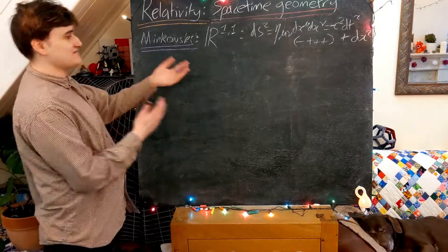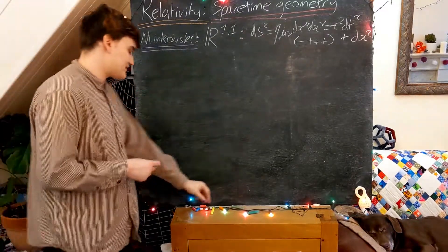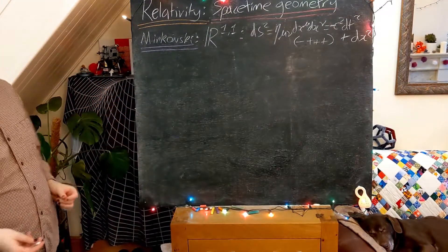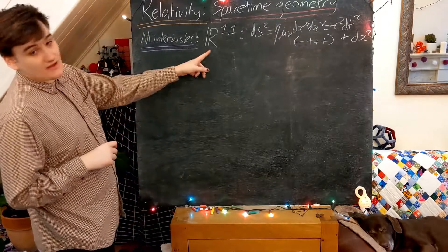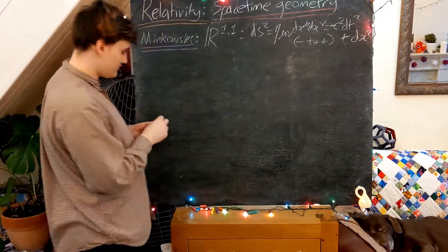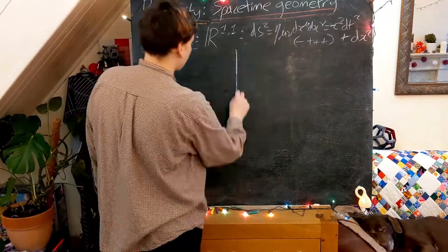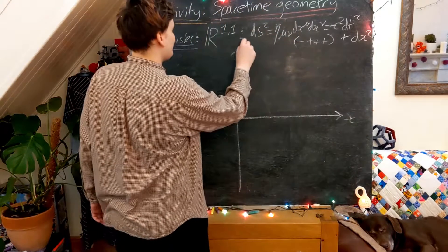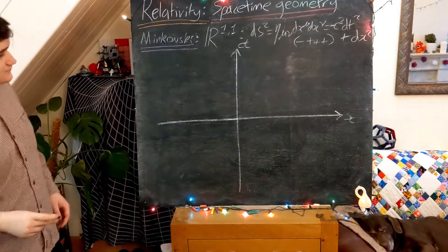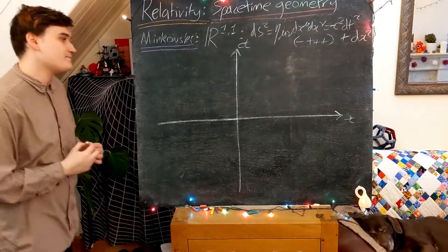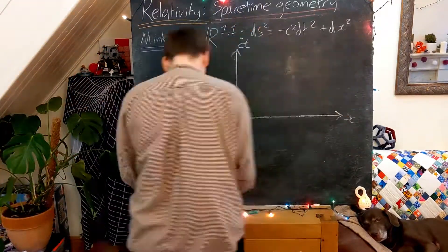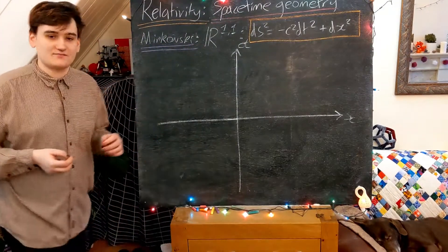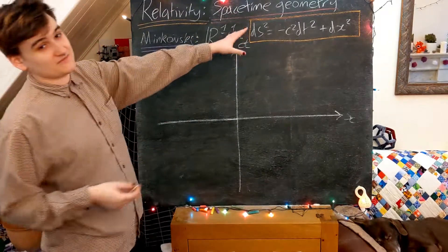For now, this is just a definition of the Minkowski metric. Now we're going to look at essentially the geometry that this metric is defining. We're looking at a two-dimensional space-time, so let's draw a picture. We have our x and ct axes — this is our two-dimensional space-time. The line element is written as minus c squared dt squared plus dx squared.